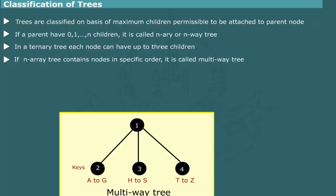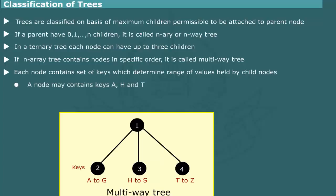In this case, each node contains a set of keys which determine range of values held by child nodes. For example, in a ternary tree, a node may contain keys A, H, and T to imply that the first child would contain a character in the range A to G. Second child would contain a character in range H to S, and third would contain a character in range T to Z.